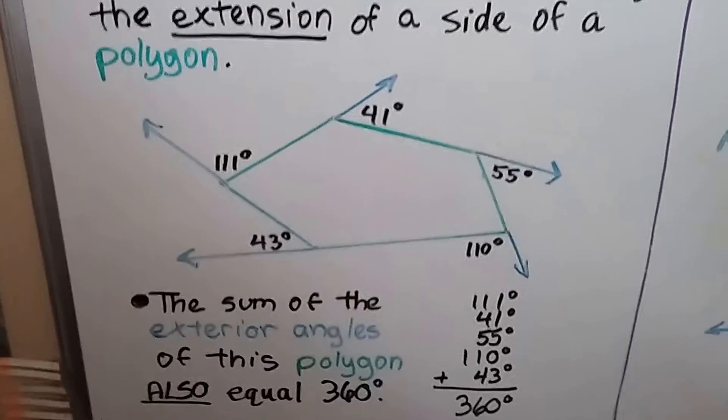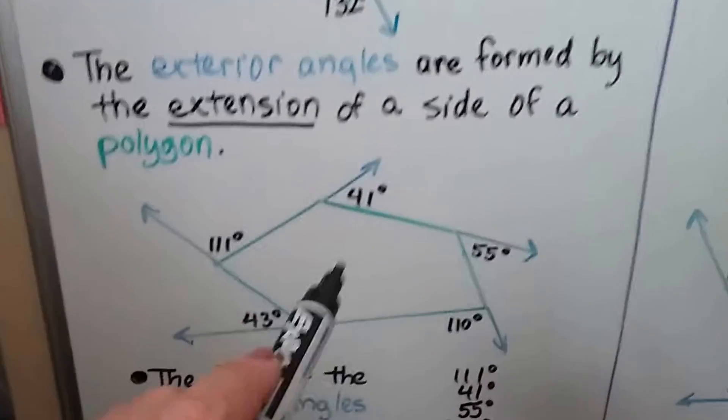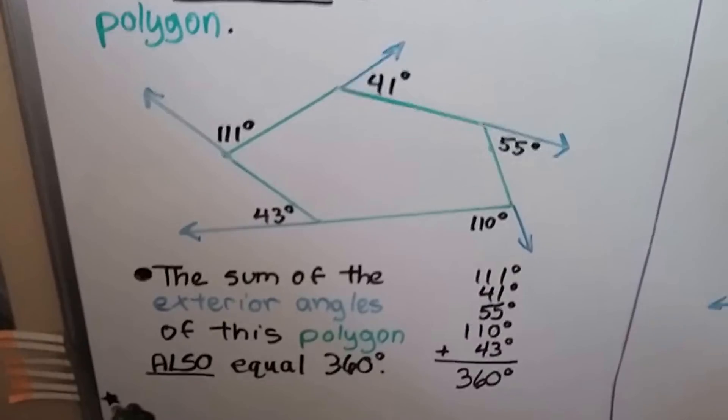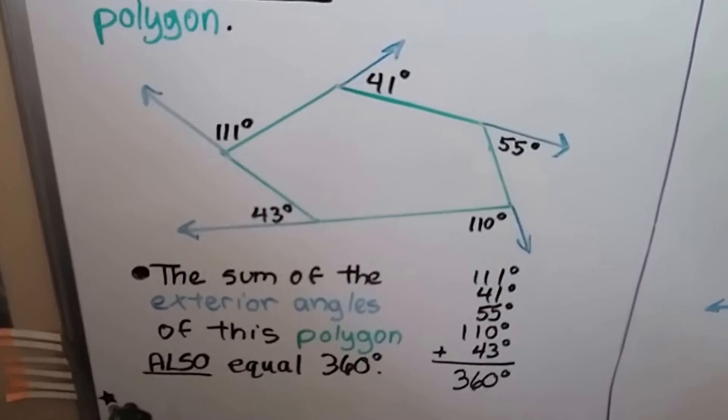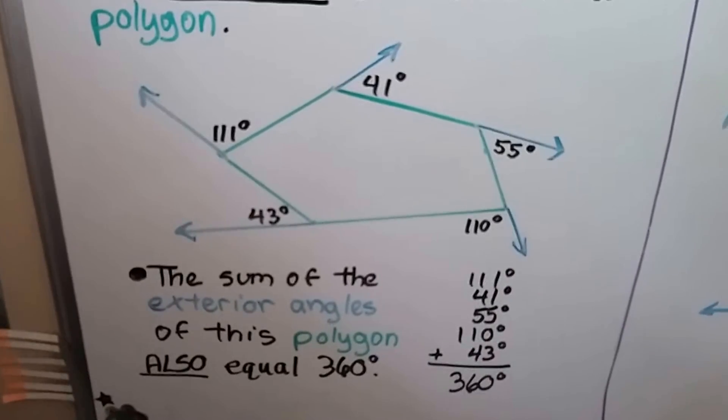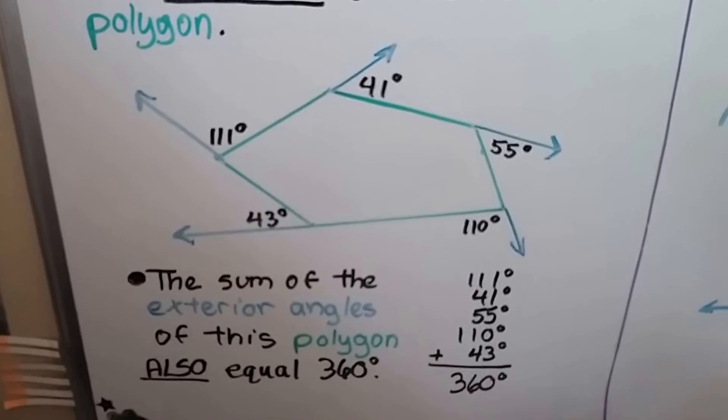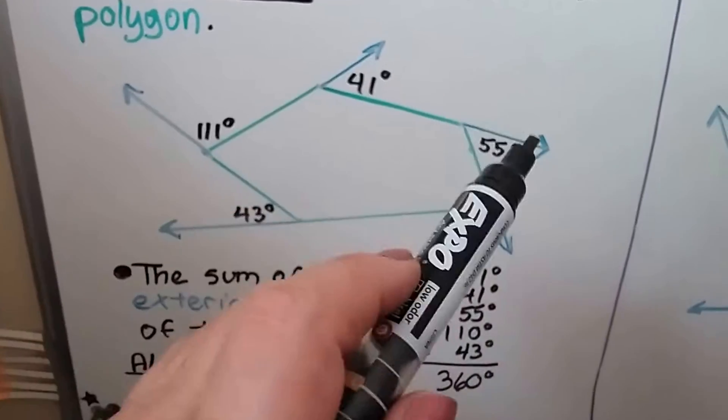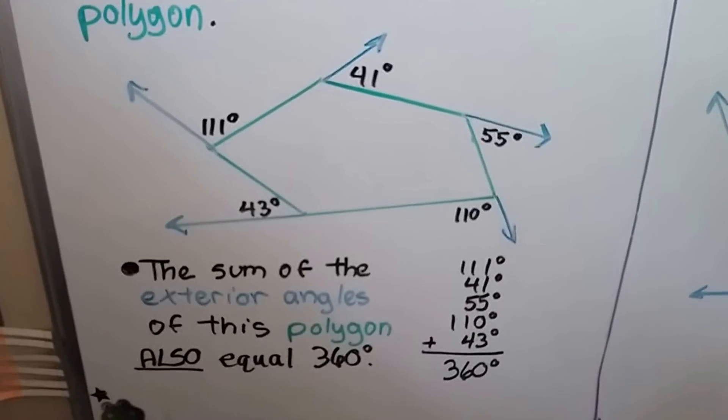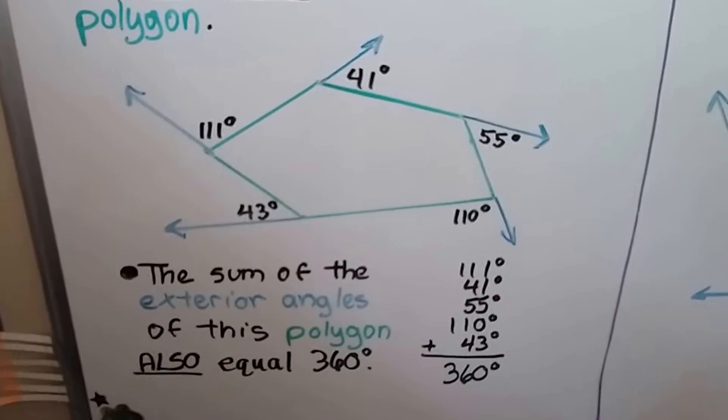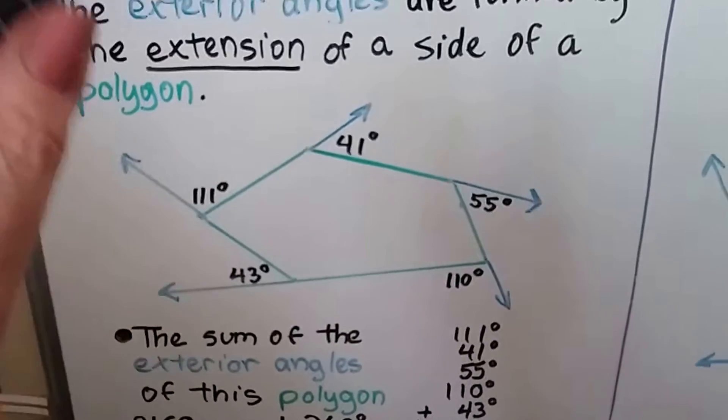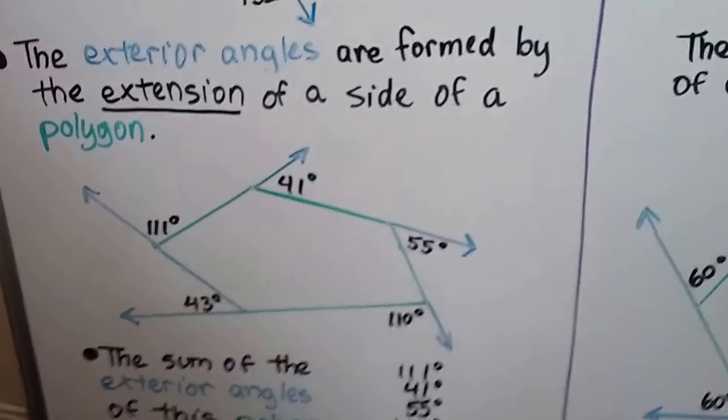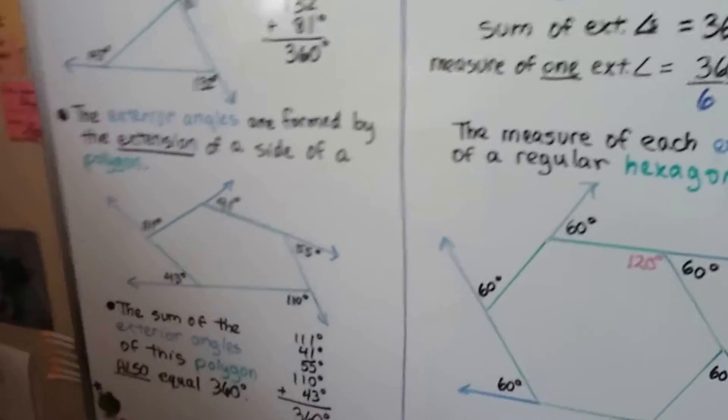Take a look at this one. Now that was a triangle, now we have a pentagon. And the sum of the exterior angles of this polygon also equal 360 degrees. We total up all of these measures, we get 360 degrees. Even though they're two different figures, one's a triangle, one's a pentagon.